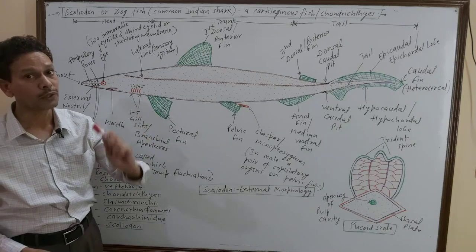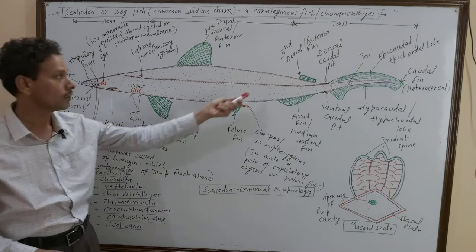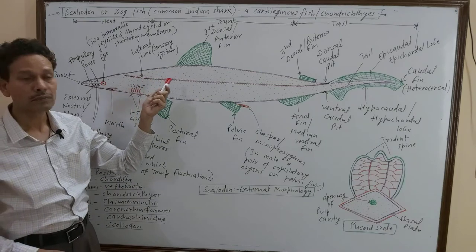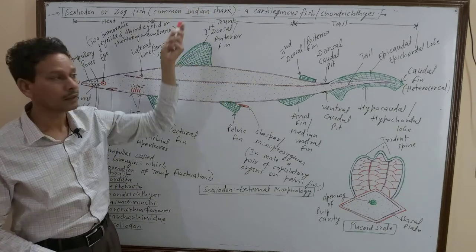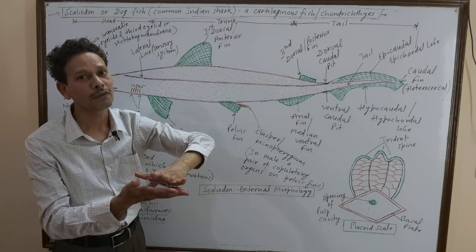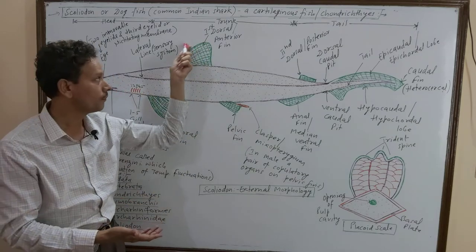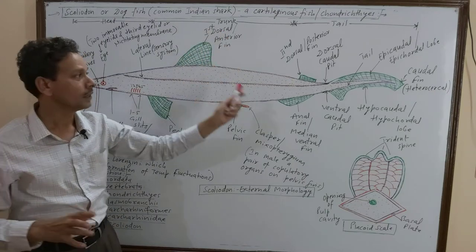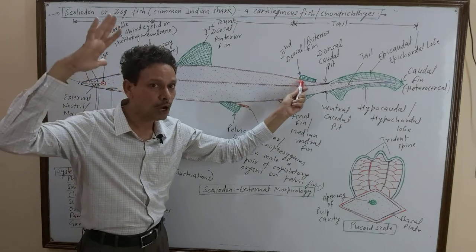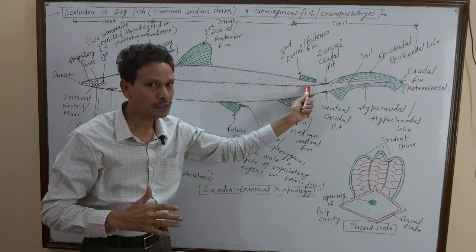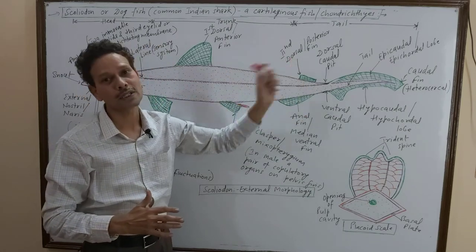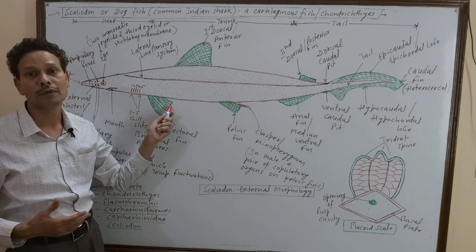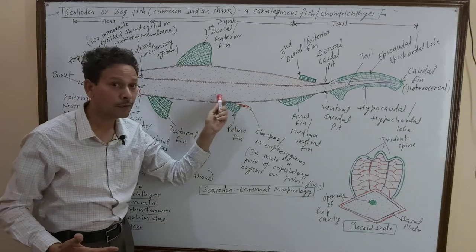The entire body is divided into three regions: the anterior part is the head, the middle largest part is the trunk, and the last part is the tail. On the dorsal region, you can see appendages — first, the large anterior dorsal fin, and second, a small posterior dorsal fin.